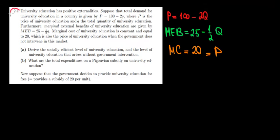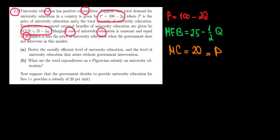Let's start working on question 2.4. University education has positive externalities. The demand for education is given by a function where P is the price and Q is the quantity of education. We also have marginal external benefits given by another function. The marginal cost of university education is constant and equal to 20, which is also equal to the price of education.